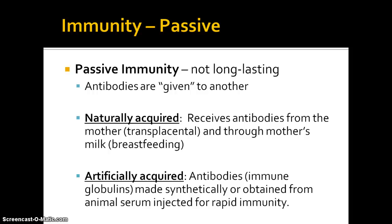Passive immunity is not as long-lasting. In passive immunity, the antibodies are given to the person rather than being made by their immune system. Passive immunity can also be naturally acquired when the child receives antibodies from its mother across the placenta when the baby is in utero, or through the mother's breast milk through breastfeeding. Passive immunity can be artificially acquired when antibodies themselves, in the form of immune globulins, are injected into the person for rapid immunity — for example, hepatitis B immune globulin for babies who have been exposed to the hepatitis B virus through their mother.